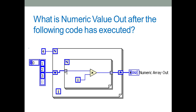The outer for loop is fixed for four iterations, whereas the inner for loop has auto-indexing enabled, so the number of iterations depends on the number of elements in the array. The inner for loop will execute three times per outer iteration, giving a total of 12 inner loop executions.